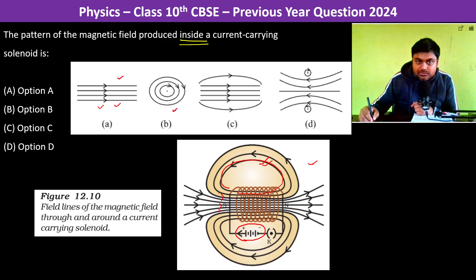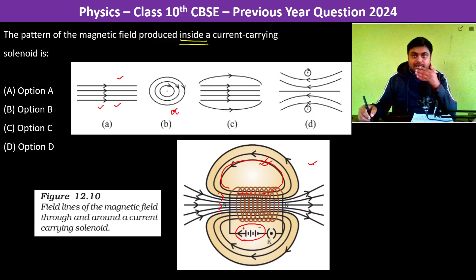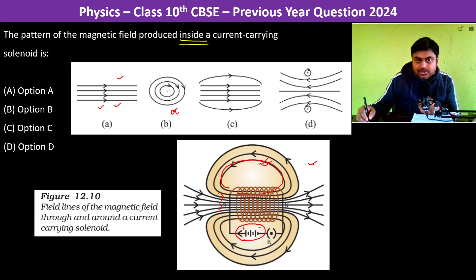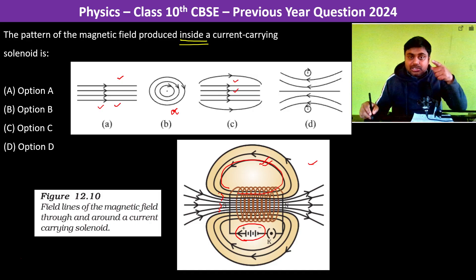Here inside this will not be there because inside it is parallel, inside there are no loops. Here if you see, the magnetic field is stronger here, the magnetic field is lesser, and it is not parallel.